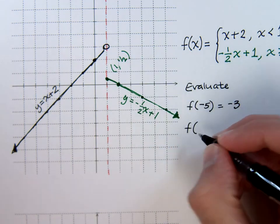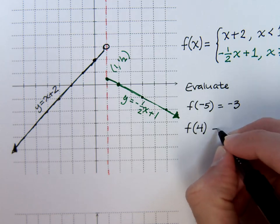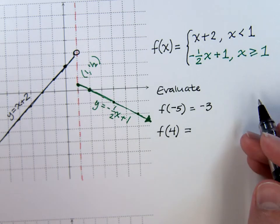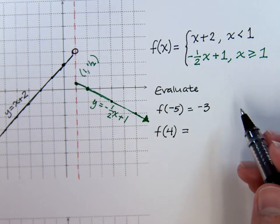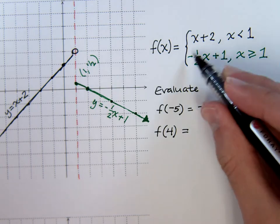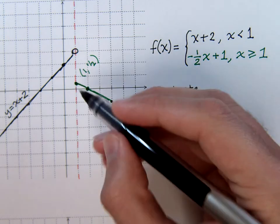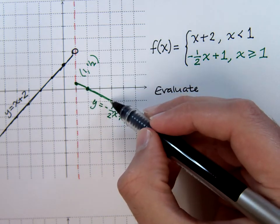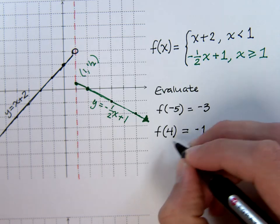If I ask to evaluate f of positive 4, when you look at the conditions here, only one of these pieces will take an x value of 4. 4 is greater than or equal to 1, so you would plug him into here. Now this is our green guy. We already have that graph, so when x is 4, you see that y is negative 1. And you would have gotten the same thing had you just plugged the 4 in here.